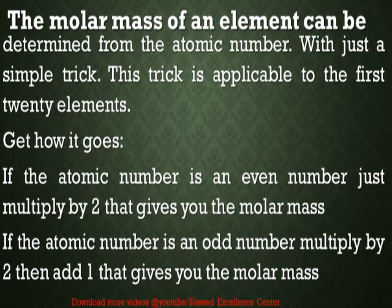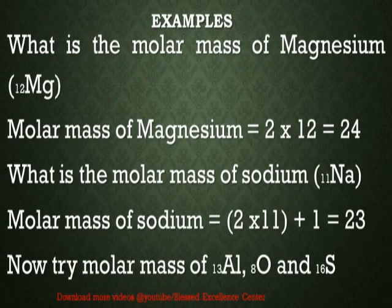And then, if the atomic number of an element is an odd number, multiply it by 2, then add 1. That gives you the molar mass. As simple as that. You don't need to disturb your brain. It's just very simple. Now, let's look at some examples.